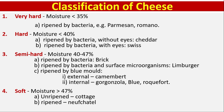Hard cheese: moisture content should be less than 40%. Ripened by bacteria without eyes, example: Cheddar cheese. Ripened by bacteria with eyes, example: Swiss cheese. Semi-hard cheese: moisture content should be between 40 to 47%.